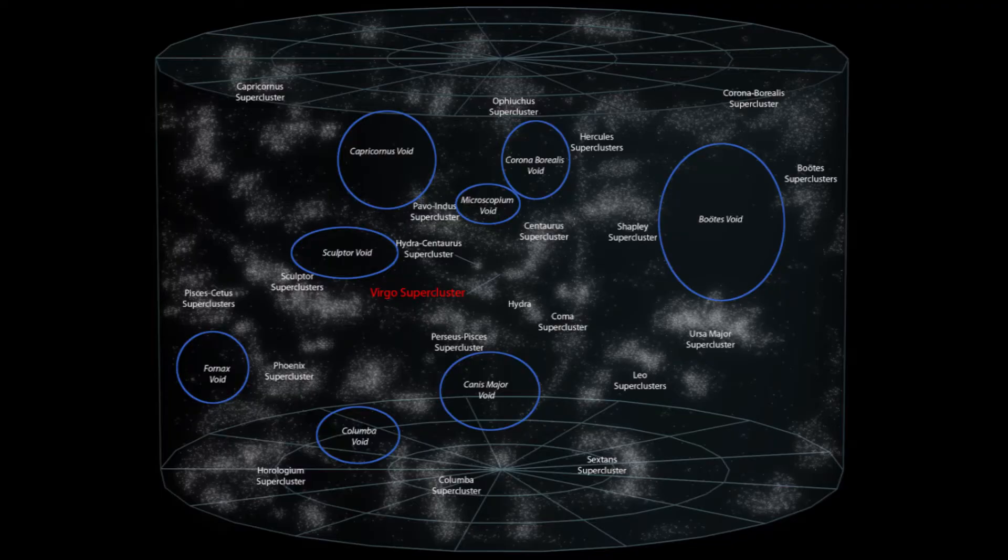Another structure that lies in intergalactic space is the void. Voids are structures that are defined by their absence of matter. They are large regions of space that appear to have almost no visible galaxies or matter, and form in between the cosmic web.